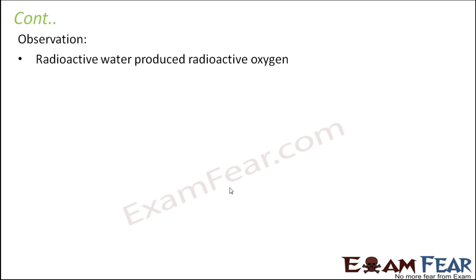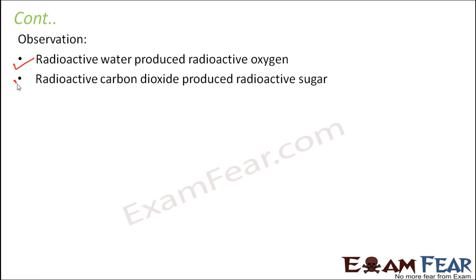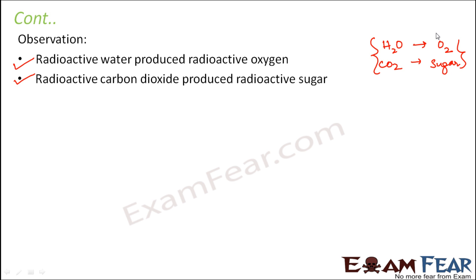The observation was that radioactive water produced radioactive oxygen. Also, radioactive carbon dioxide produced radioactive sugar. When the oxygen of carbon dioxide was made radioactive, the oxygen which was produced was not radioactive, but the sugar was radioactive. So it was concluded that in that reaction, water gives oxygen and carbon dioxide gives sugar — the oxygen comes from water and the sugar comes from carbon dioxide.